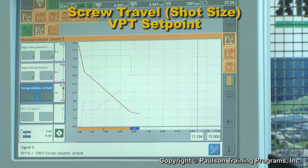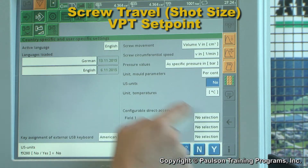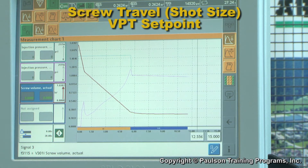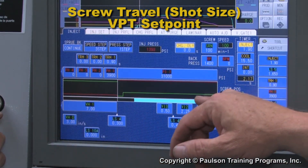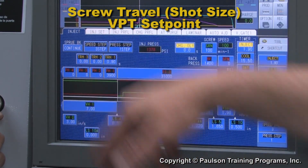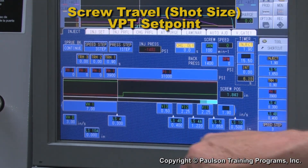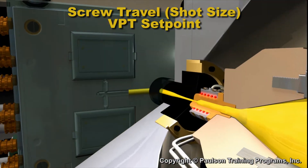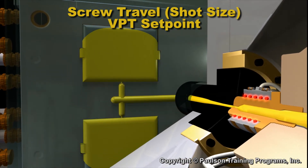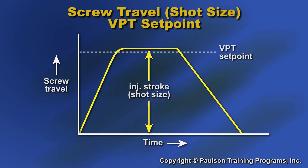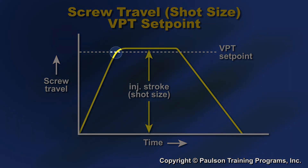A screw travel setpoint is a commonly used measurement for the VPT. We can use part weight to establish the volume of fill. To determine the best VPT Setpoint, we mold short shots. We want to switch when the part is about 95% full — that would be slightly before the screw stops moving forward, about here.